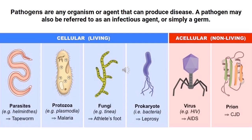What's the definition of a pathogen? It's any organism or agent that can produce disease. A pathogen may also be referred to as an infectious agent or a germ. They are living things, except in the case of viruses and prions, which are considered not living, but they reproduce and transmit diseases, so those are also contained in the pathogen category.